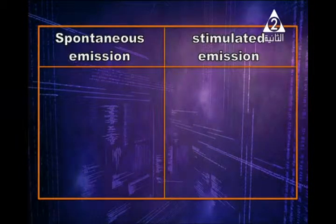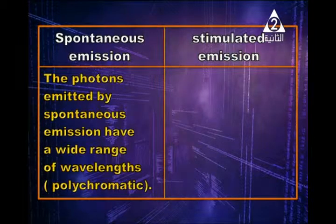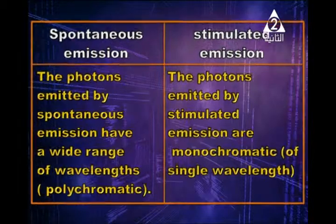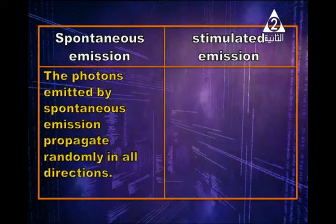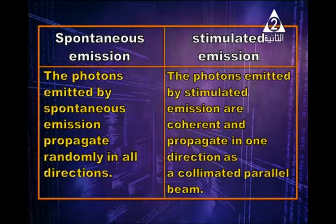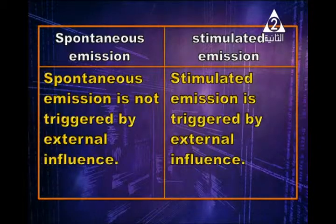Differences between spontaneous and stimulated emission: Photons emitted by spontaneous emission have a wide range of wavelengths — polychromatic. Photons emitted by stimulated emission are monochromatic, of a single wavelength. Photons from spontaneous emission propagate randomly in all directions — they are divergent. Photons from stimulated emission are coherent and propagate in one direction as a collimated parallel beam. Spontaneous emission is not triggered by external influence, but stimulated emission is.